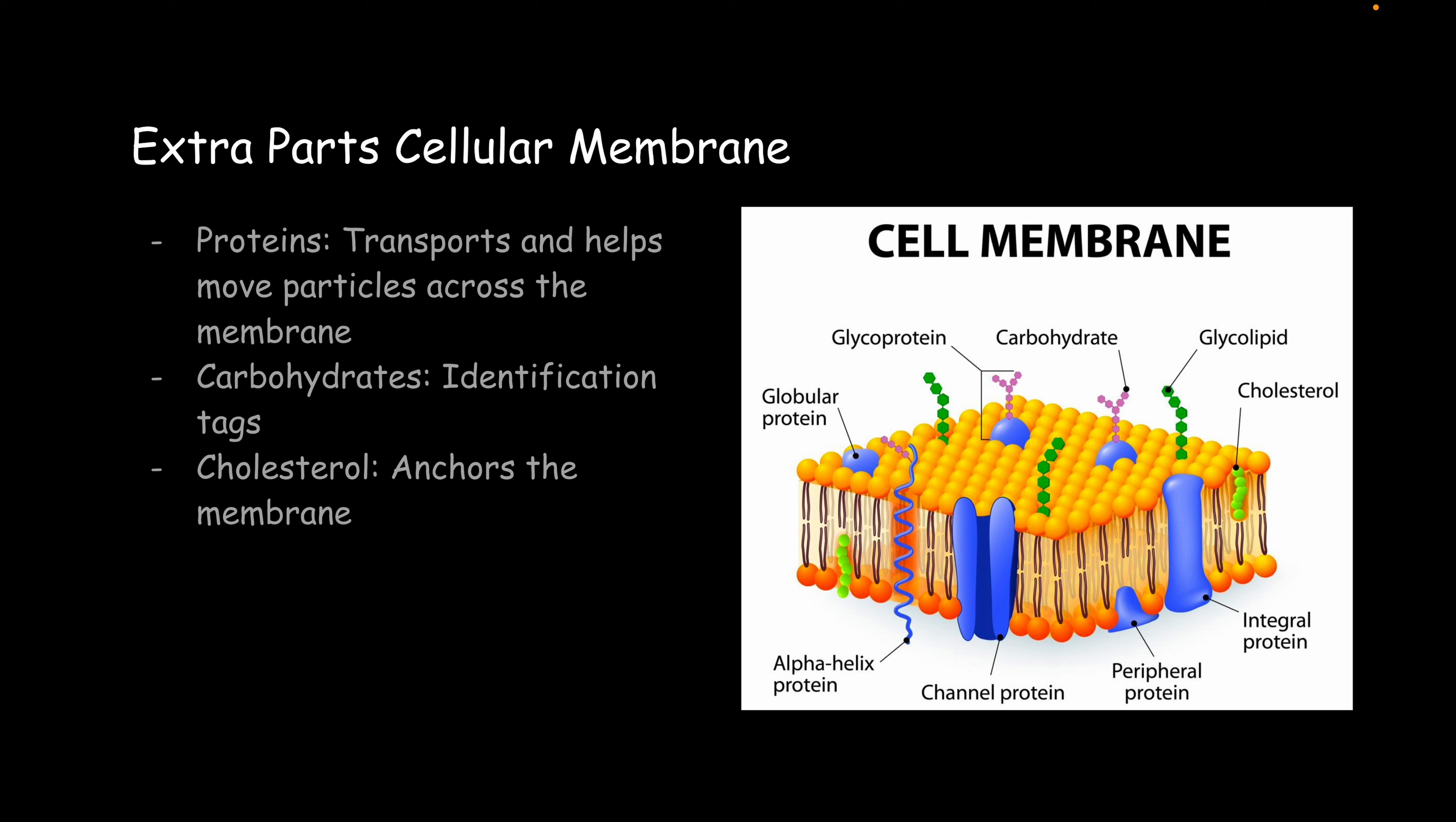Some extra parts of the cell membrane. First, you've got proteins. These are going to help particles move across the membrane. You've got channel, peripheral, integral. You've got so many proteins. The goal of it is to transport something that's too large, charged, anything that can't diffuse across the membrane easily, we're going to need those proteins to help. Carbs are going to act as identification tags, and cholesterol is going to anchor that membrane down.